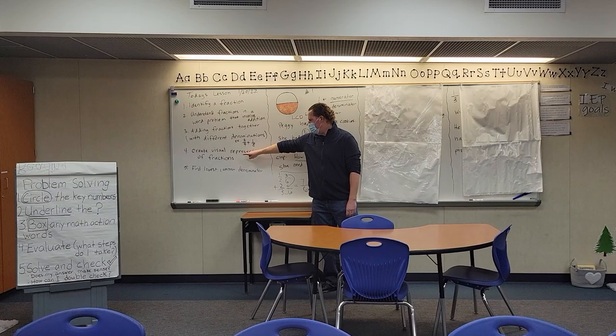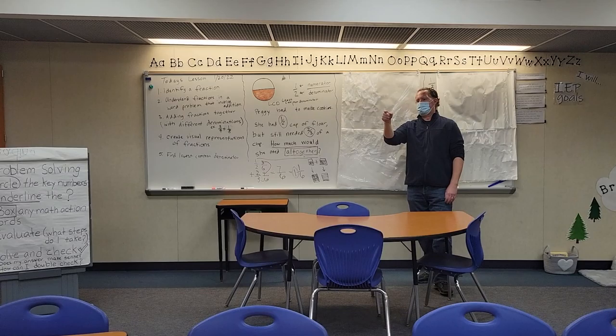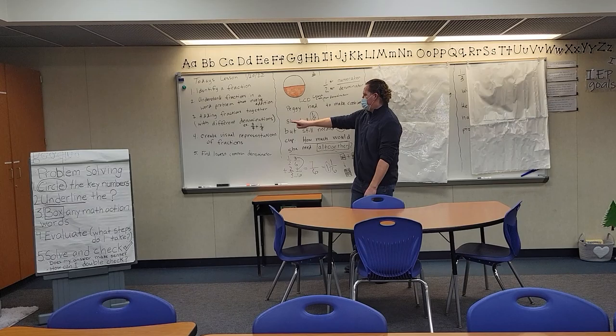Number four, you're going to learn how to create a visual representation of a fraction. I gave you a visual graphic organizer you have right there. Take about 30 seconds and look at it to get a visual sense of what a fraction looks like in a graphic image. And the last thing, step number five, is you're going to learn how to find the least common denominator — LCD. Lowest or least are the same thing. That's really important here.